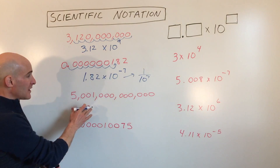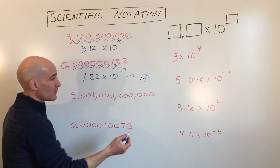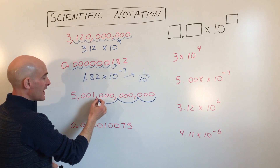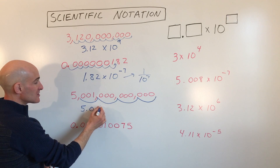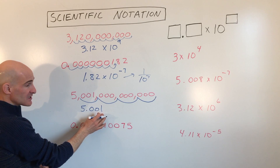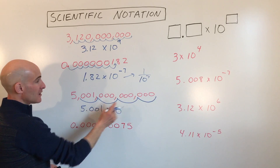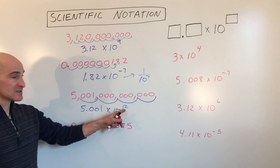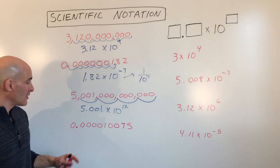Here we have another very large number. A quick trick: wherever you see a comma, that represents three places. So we move the decimal 3, 6, 9, 12 places, giving us 5.001 — we need those interior zeros as they are placeholders, and 1 is a significant digit — but we don't need the trailing zeros. So this is 5.001 times 10 to the 12th. To convert back, just move the decimal 12 places to the right.